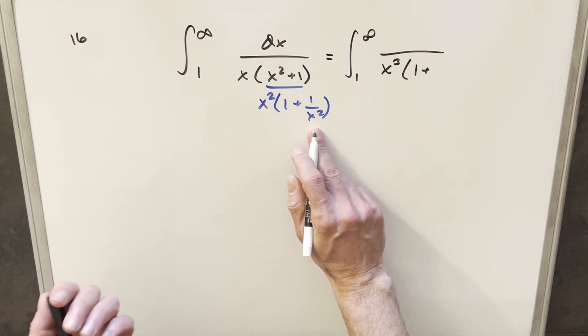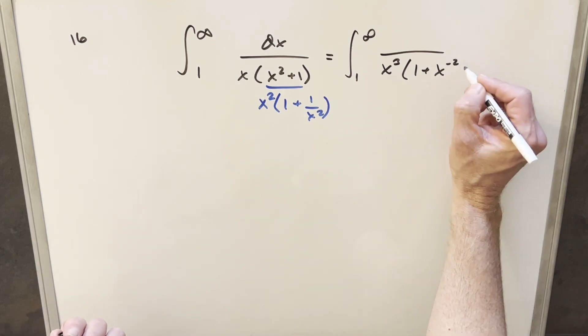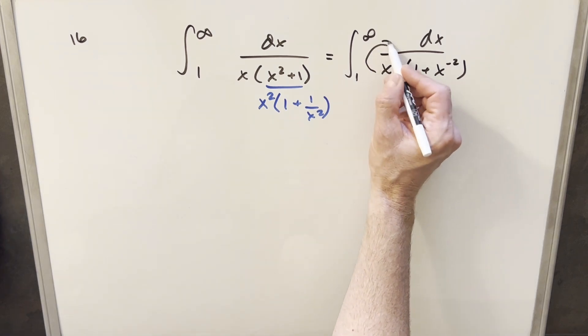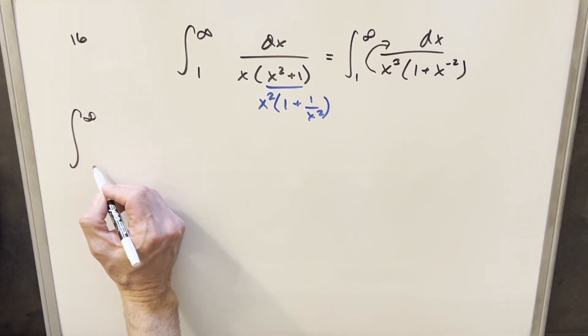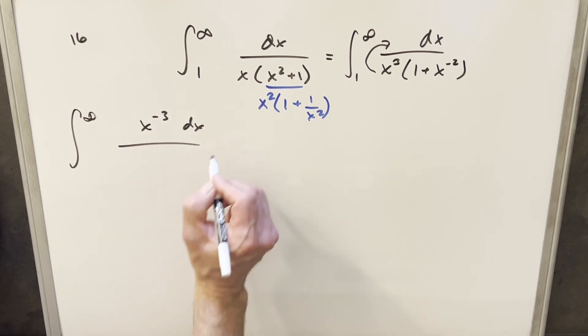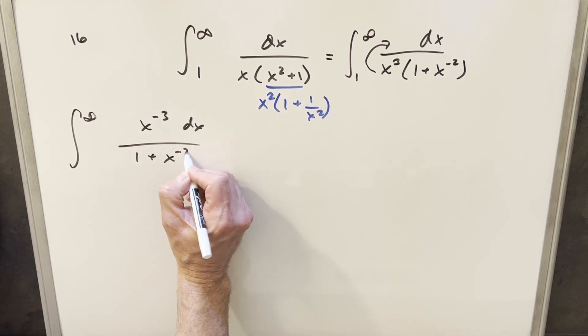And then this is going to be 1 plus 1 over x squared. I'm going to write this as x to the minus 2 with the dx in the numerator. But I can just take my x cubed and bring that into the numerator. So I'm going to write that in the numerator as x to the minus 3 dx over 1 plus x to the minus 2.